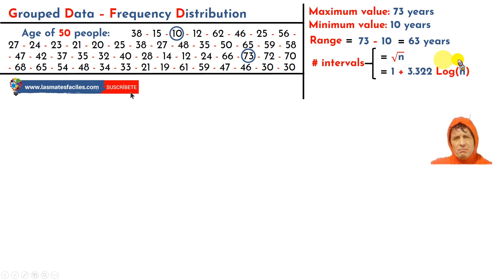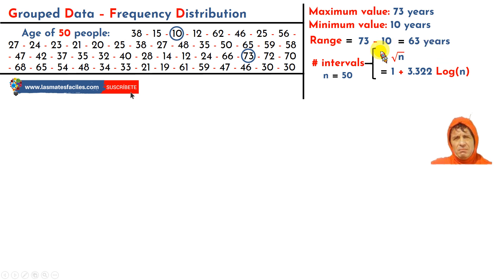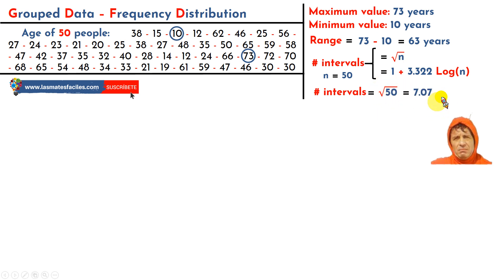We have two formulas, and in both we need the value of n. n is 50 because it's the number of data — that is the number of people surveyed. The easiest formula is the one that only involves taking the square root of n, the square root of 50. The result is approximately 7.